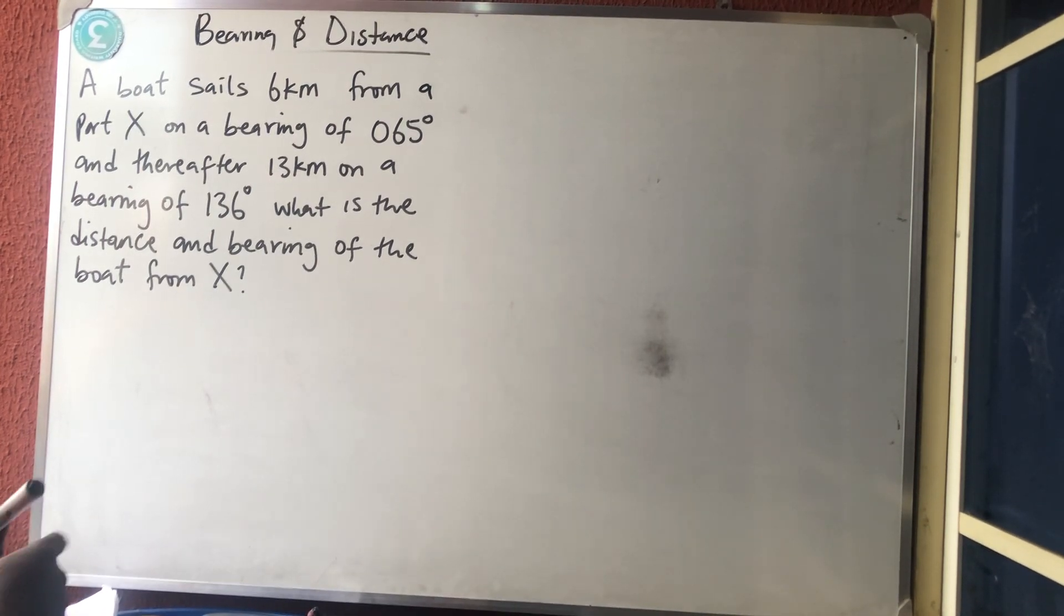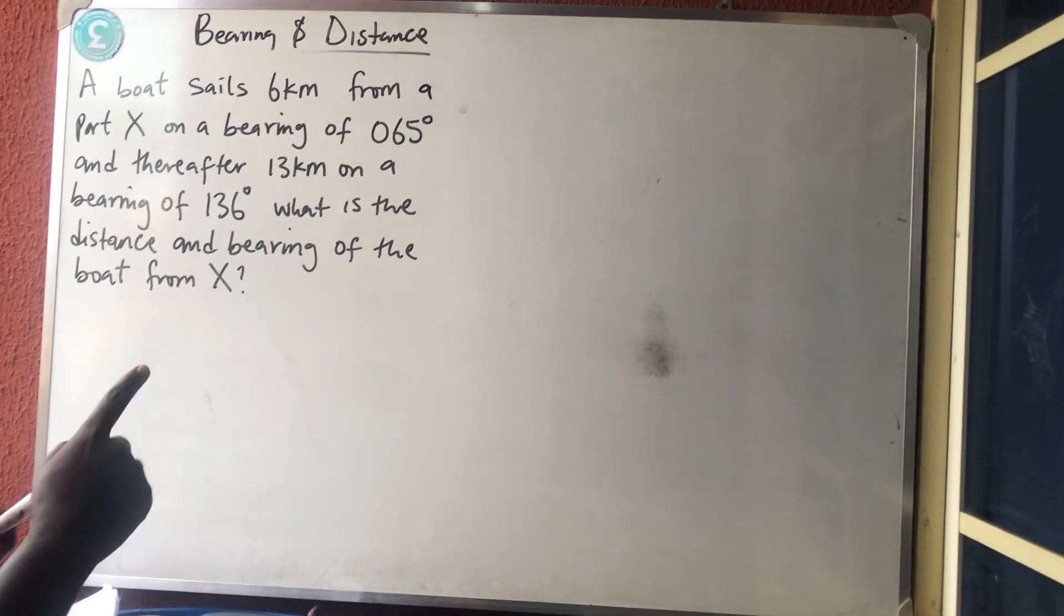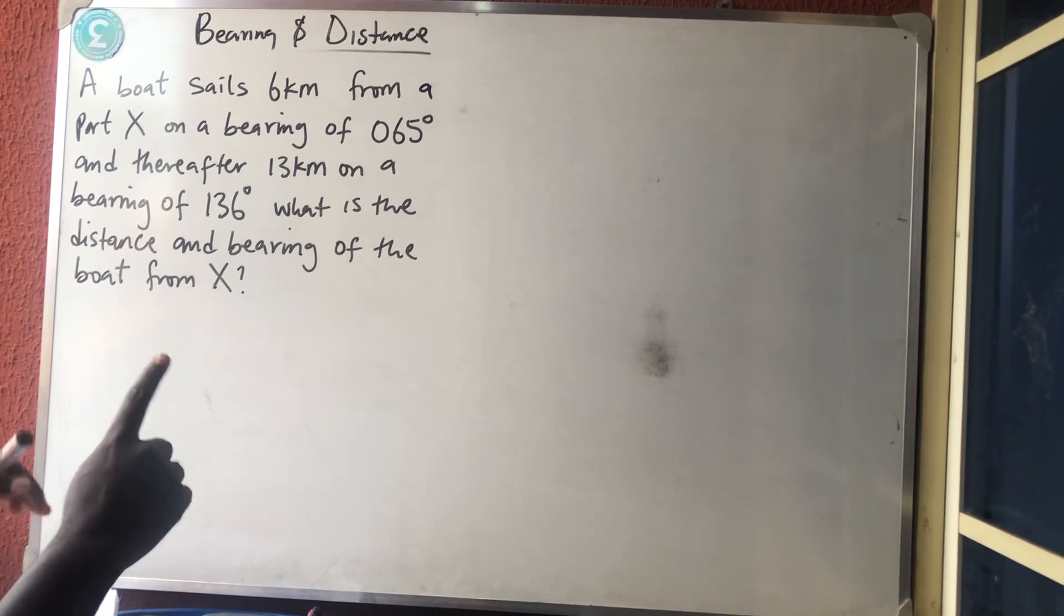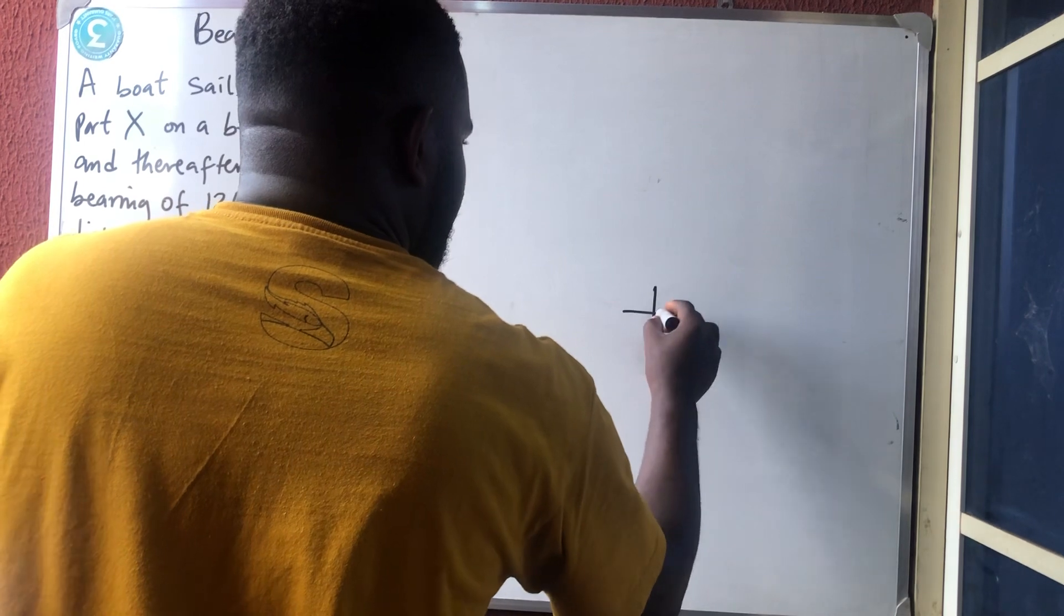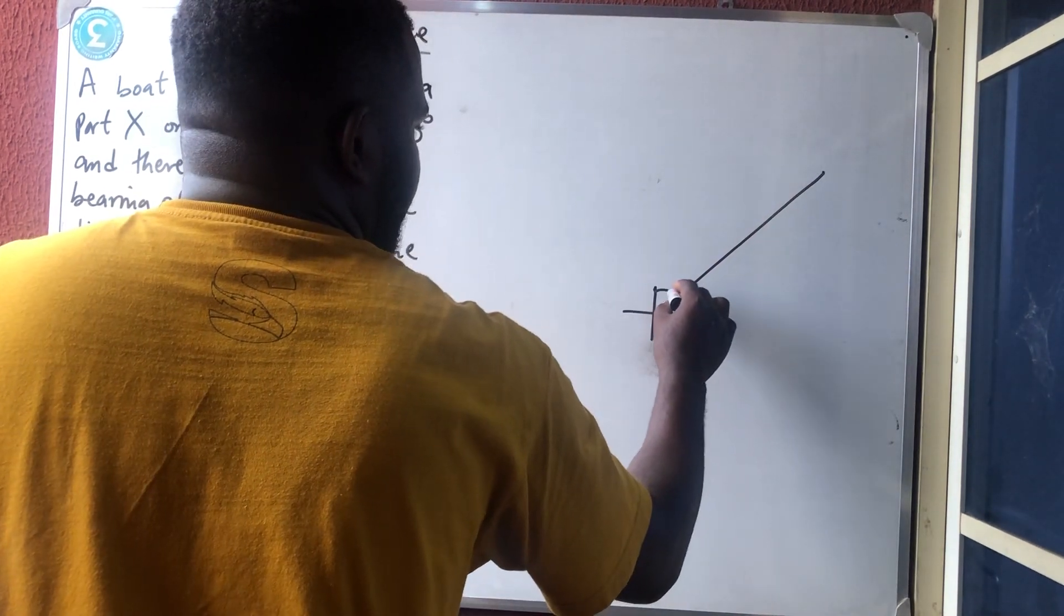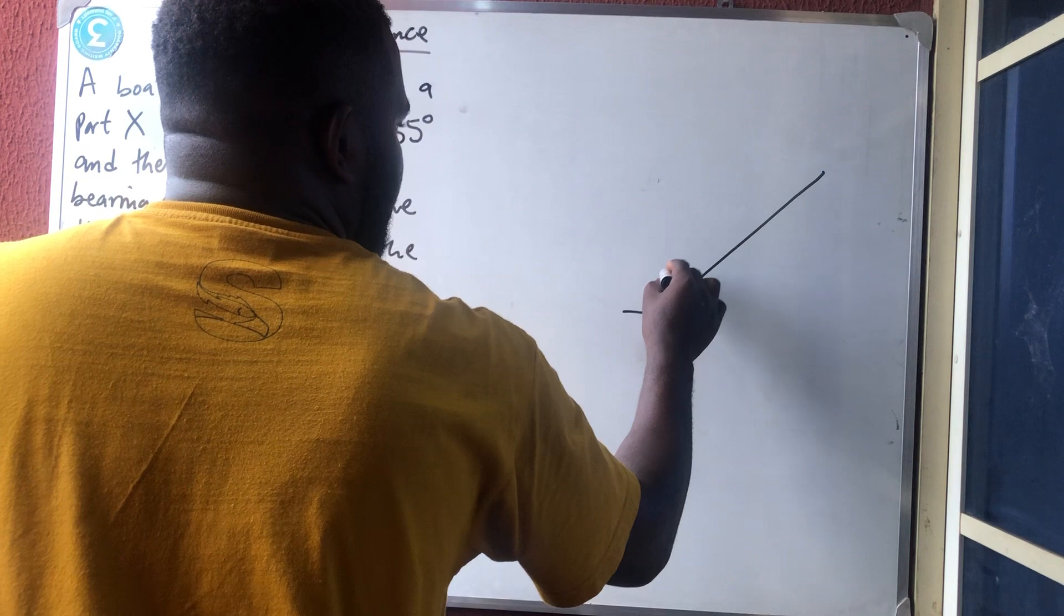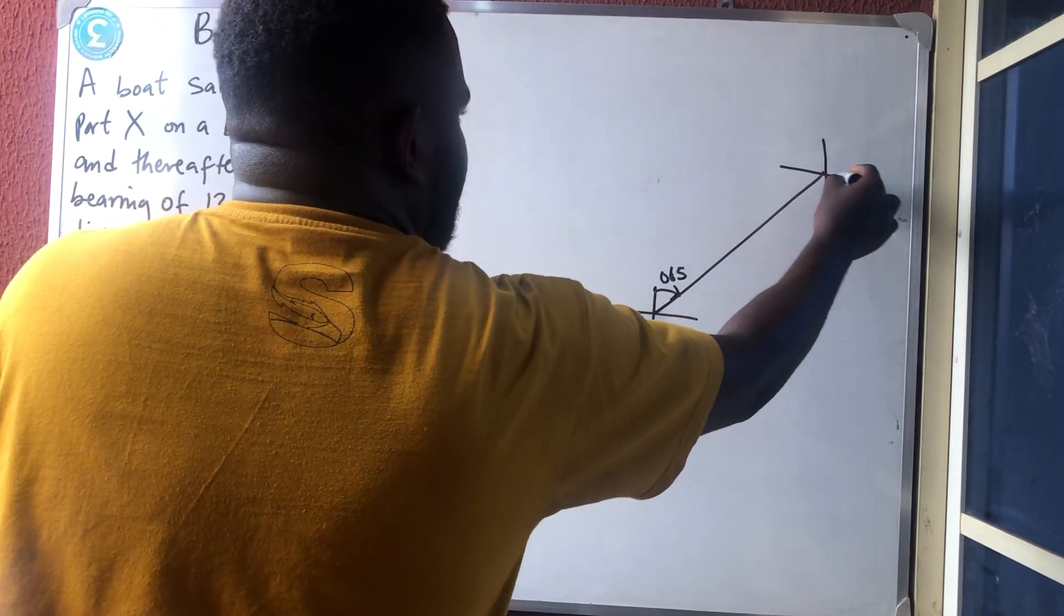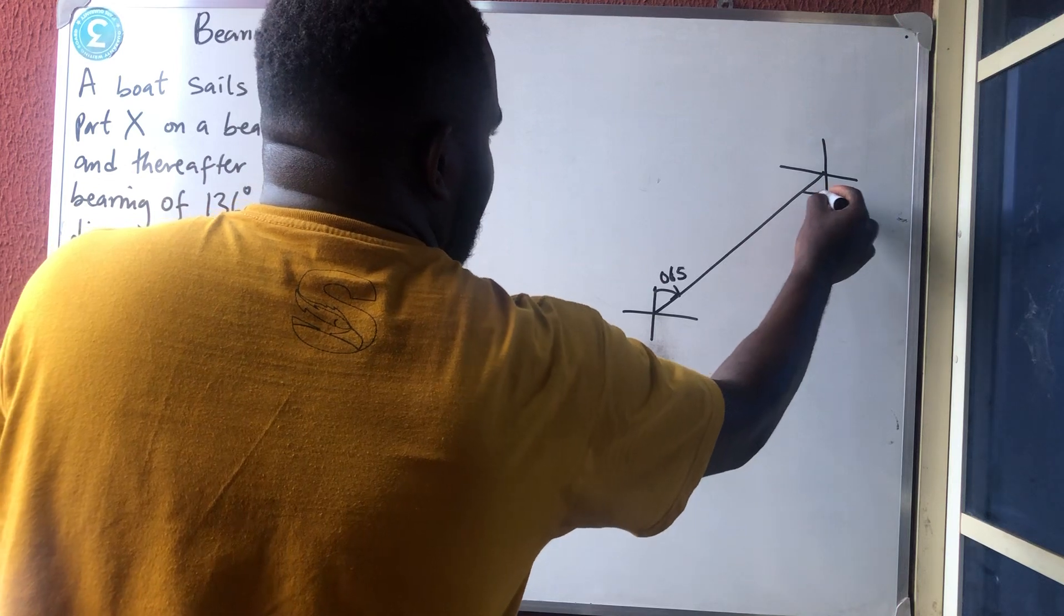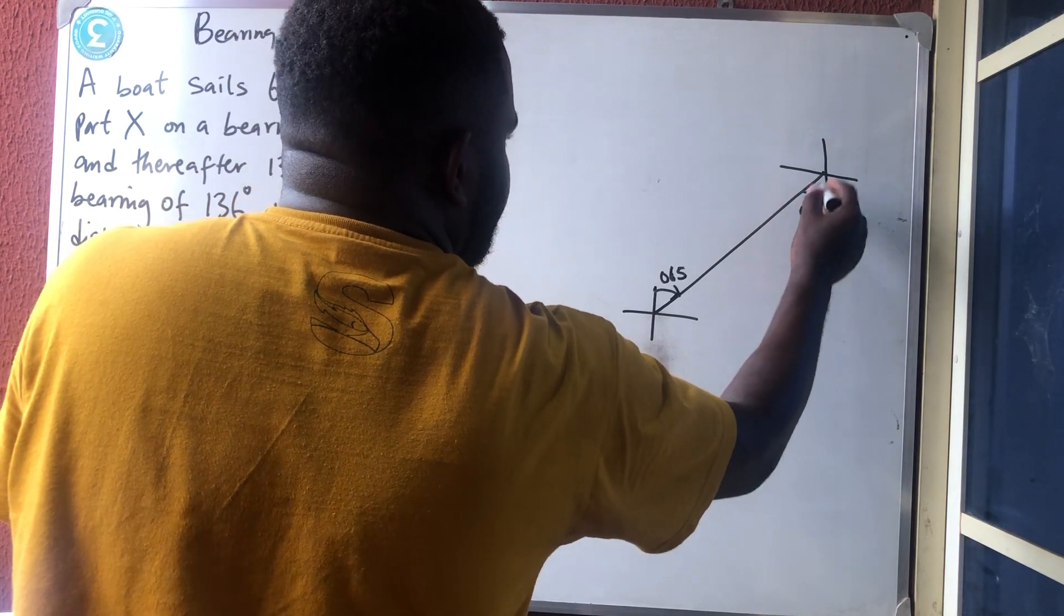That 065° is first quadrant, so let me draw it here. So this is 065° from here to here. You cut like this and cut like this. So if here is 65°, automatically here is 65°.